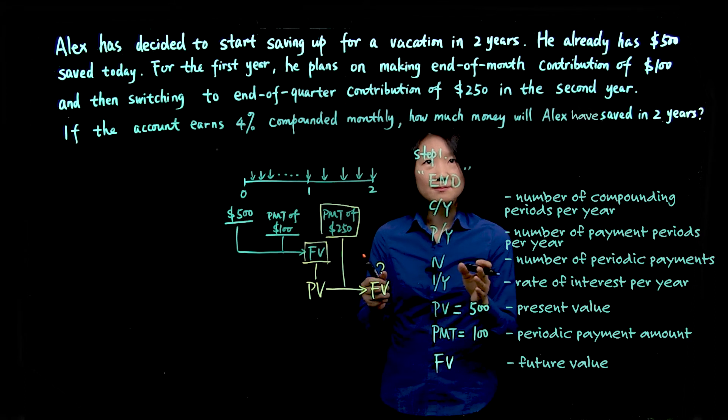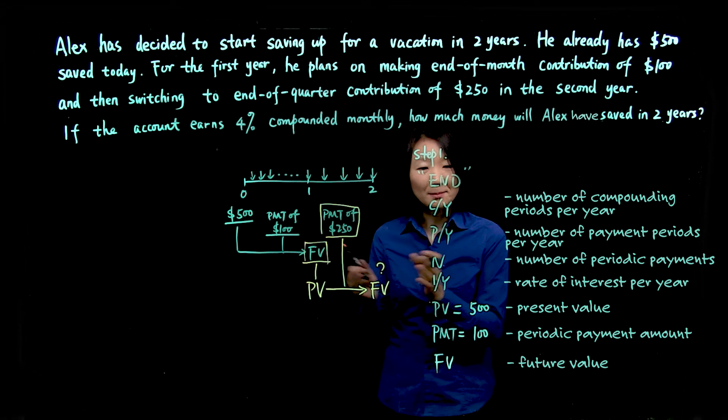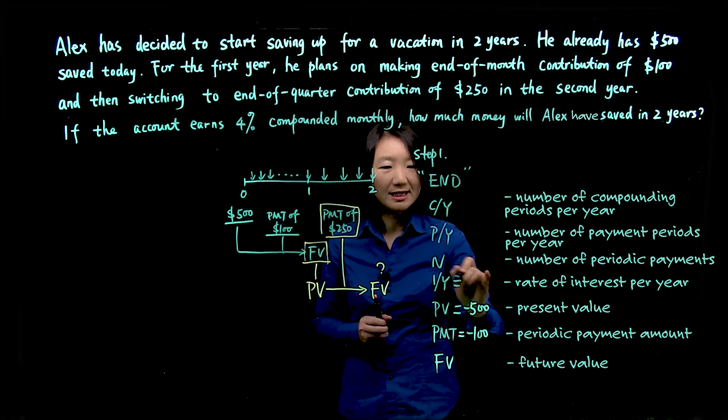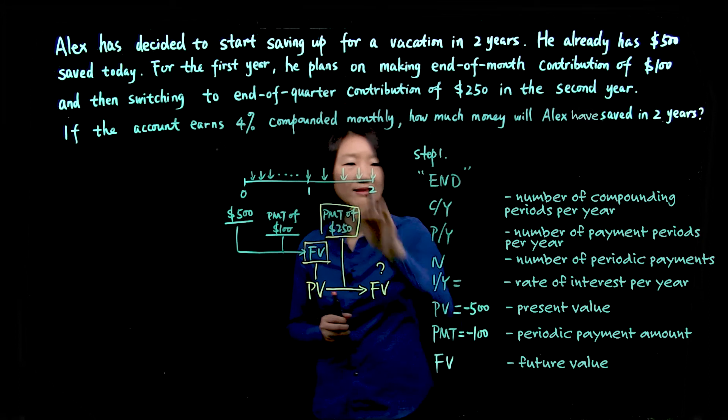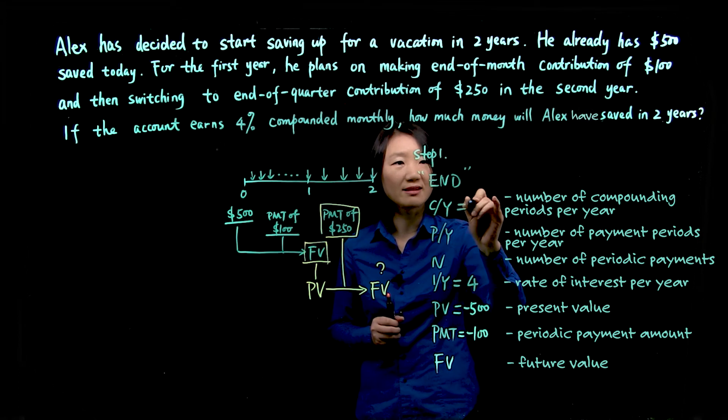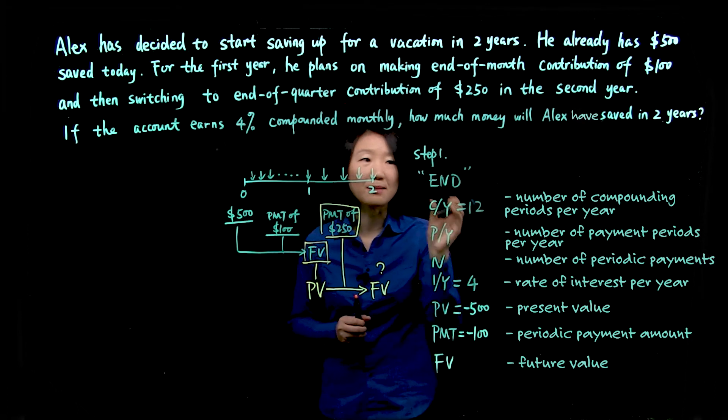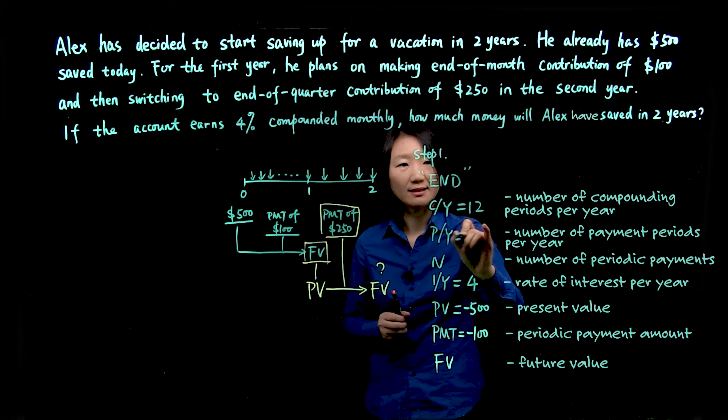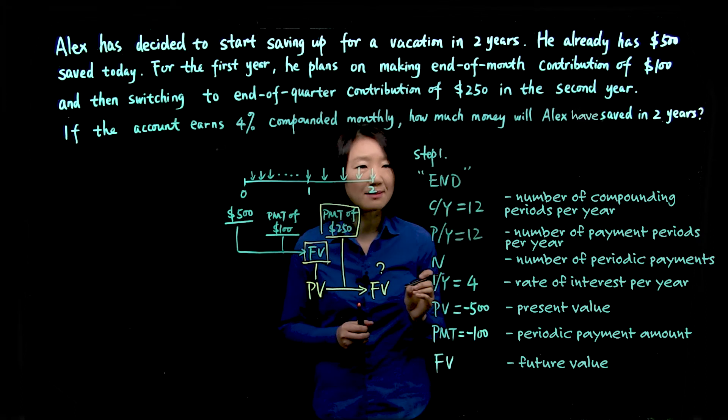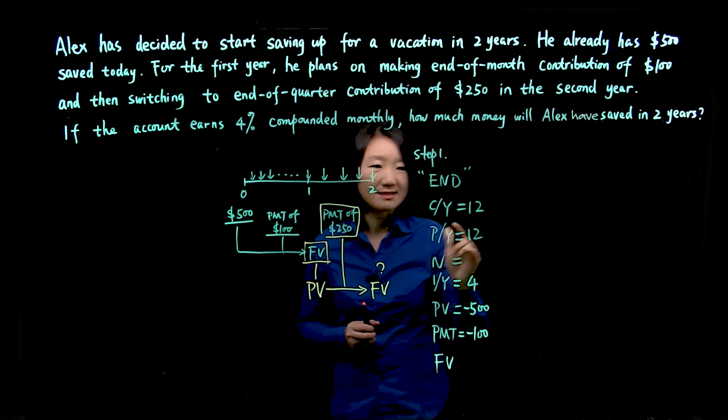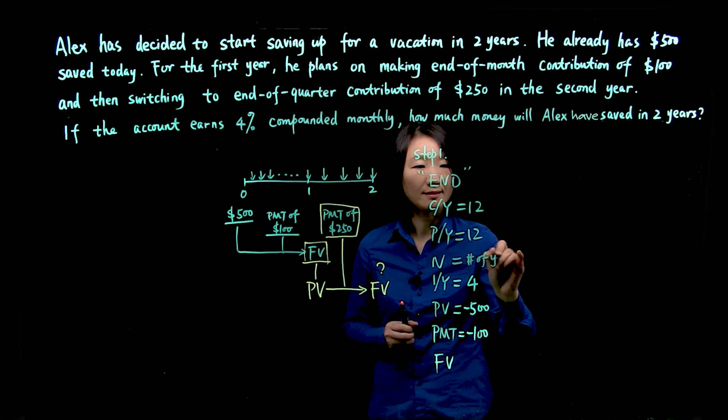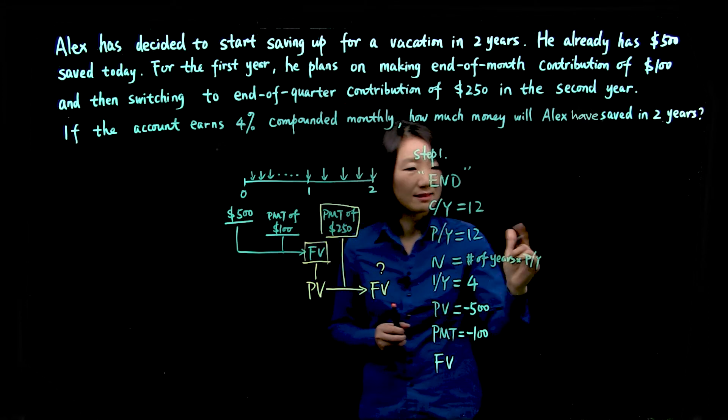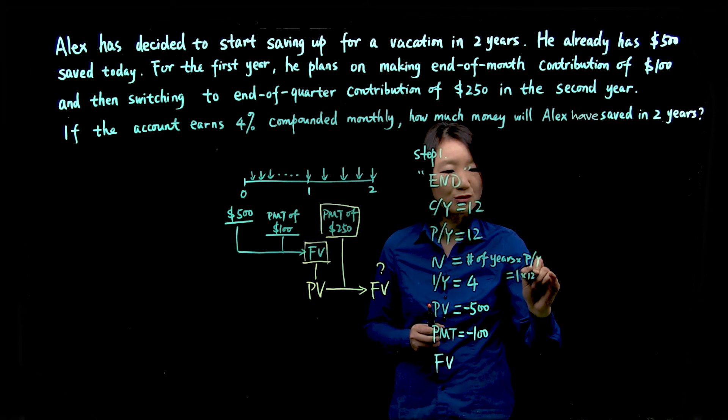Considering this money as investment, so when Alex puts this money into the bank, the money leaving him, when you use calculator, you may enter them as negative. Interest rate is 4% compounded monthly. So 4% compounding monthly, that means compounding period is every month, 12 compounding every year. And the PMT is also a monthly payment, so 12 times payment every year. N is number of years times PY, which gives us number of periodic payments. In this case, it's one year times 12 is 12.